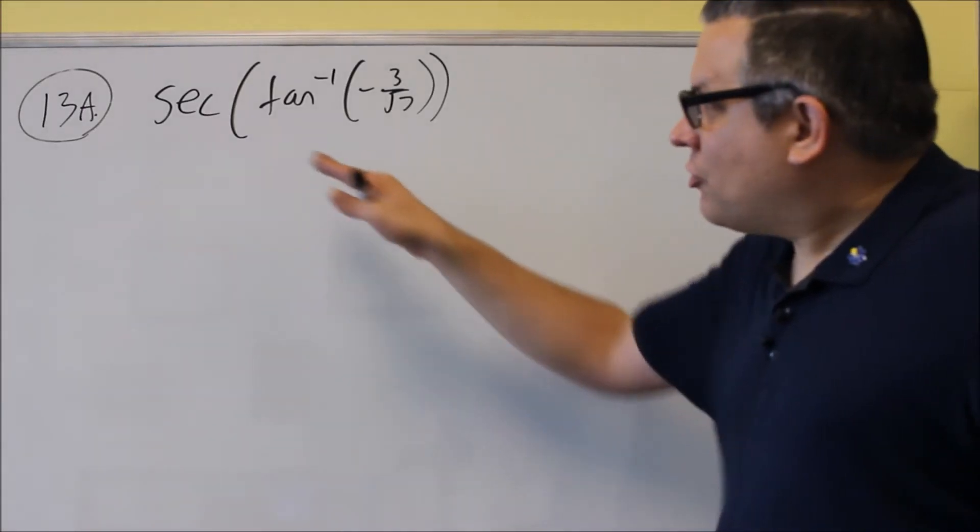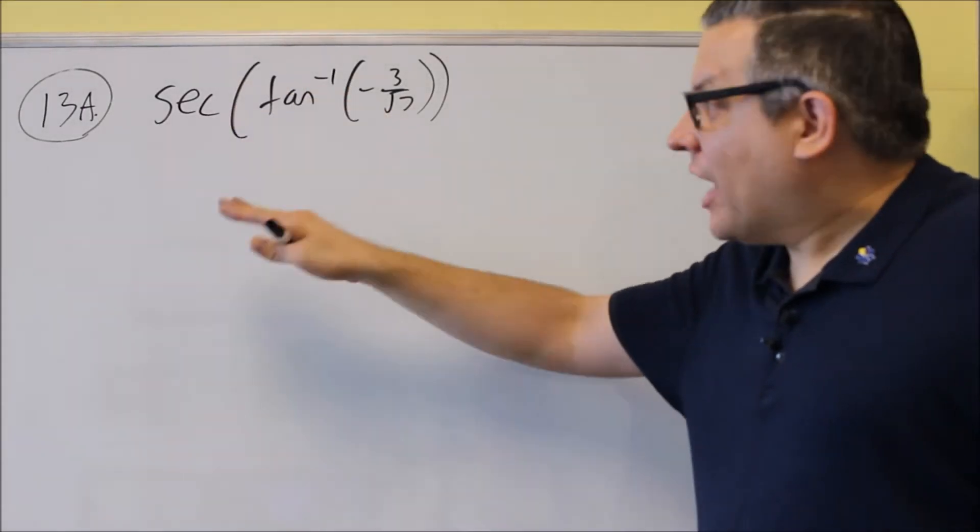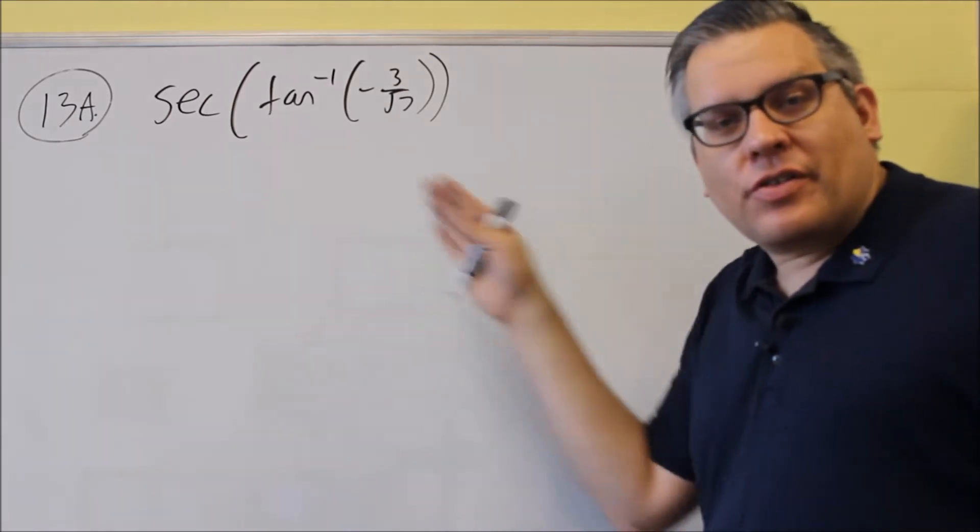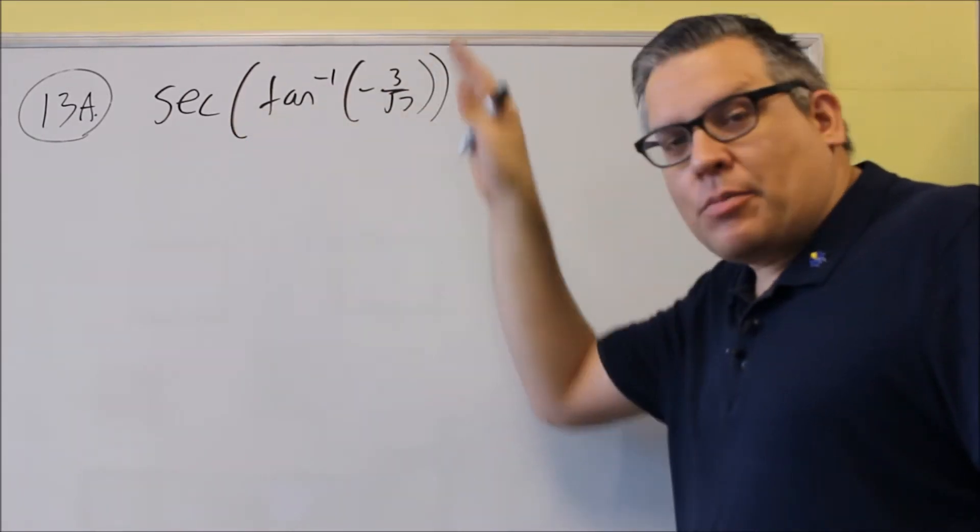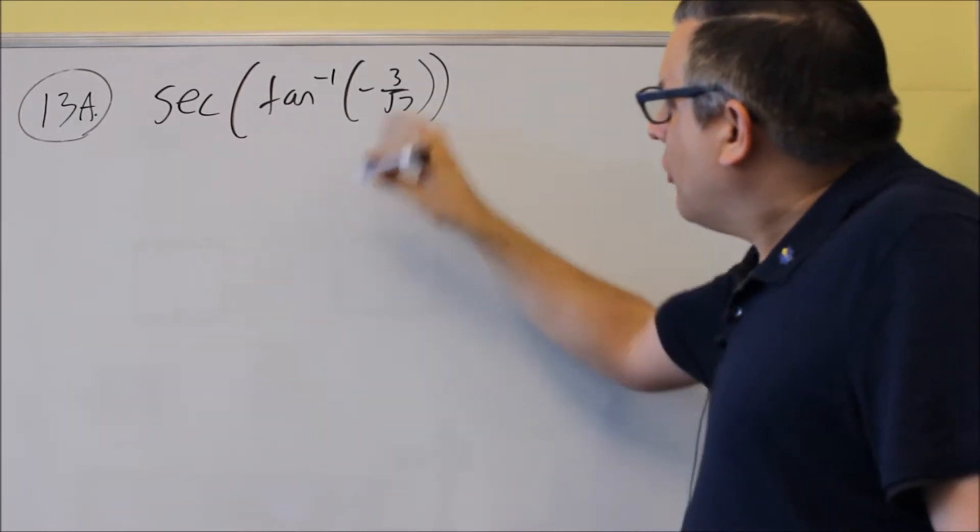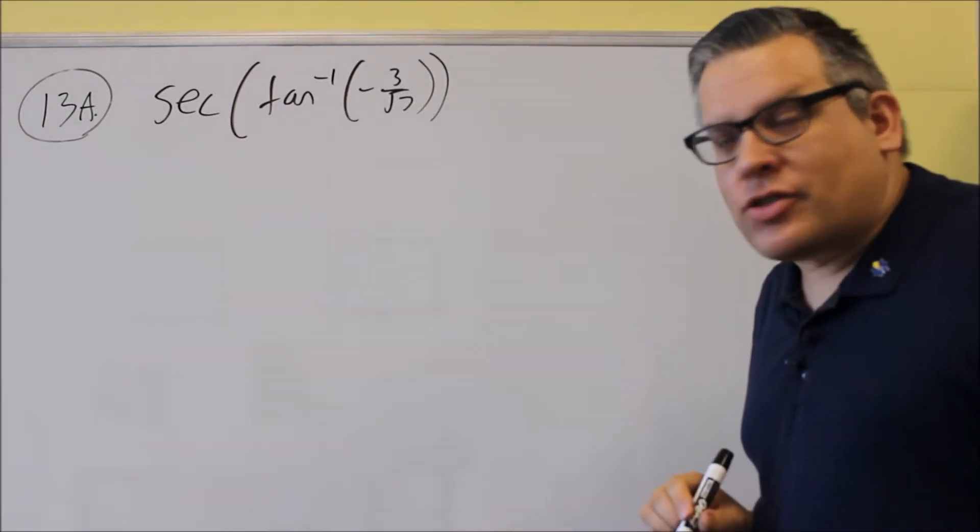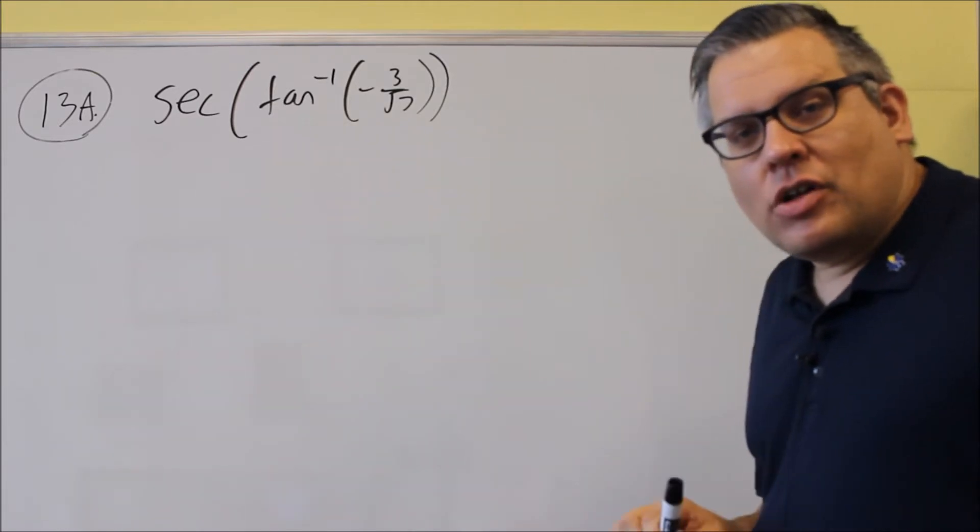What makes this problem different from 12 is we don't have the same trig function inside and outside anymore. So if we don't have the same thing, we can't apply those rules we talked about earlier. Therefore, this requires a different process. We want to find the exact value of this one.